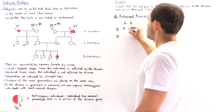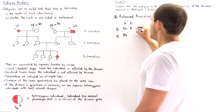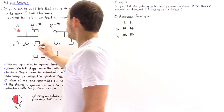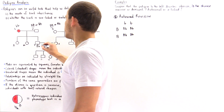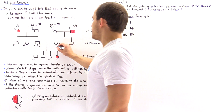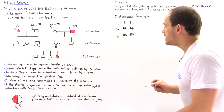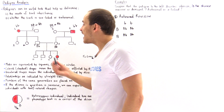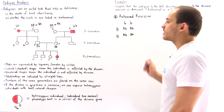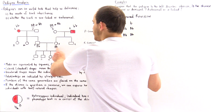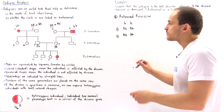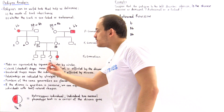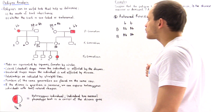Let's assume the unaffected parents are both BB. Crossing BB × bb gives all offspring as Bb — heterozygous. This includes individual 7, who is Bb, and similarly the other children. Since heterozygous individuals do not express the disease phenotype, this is consistent with the pedigree data. So these two individuals are Bb. Now we continue and see whether the next generation also works out.